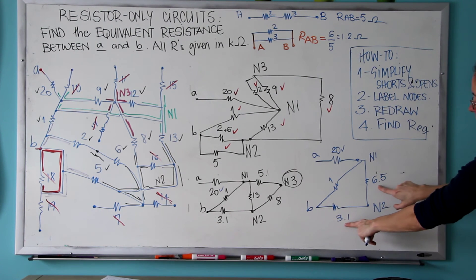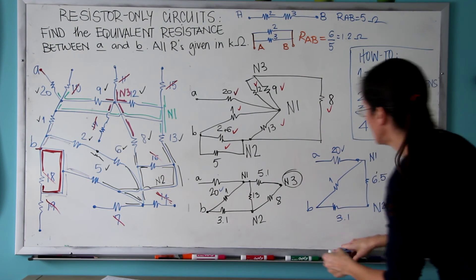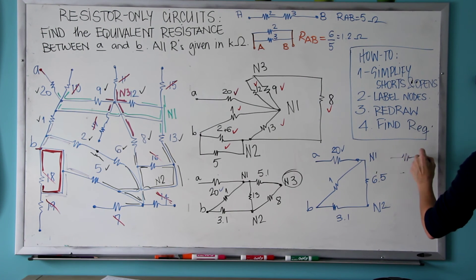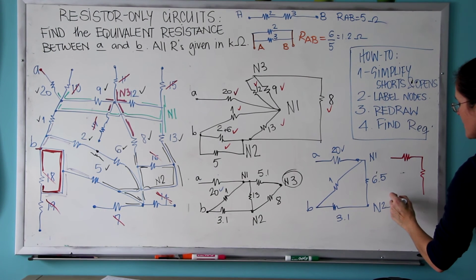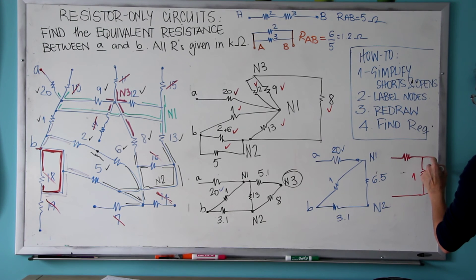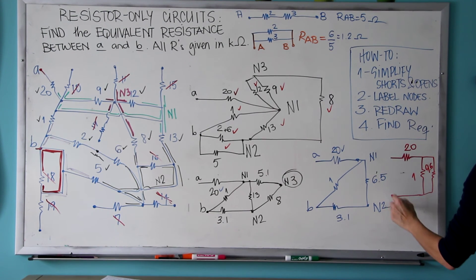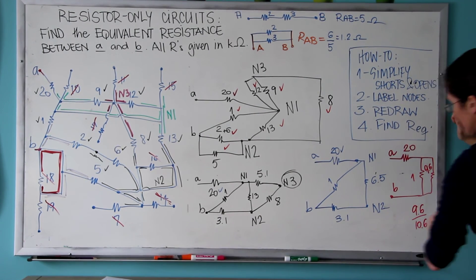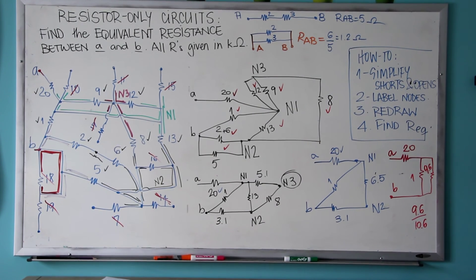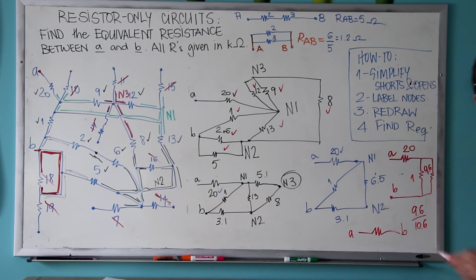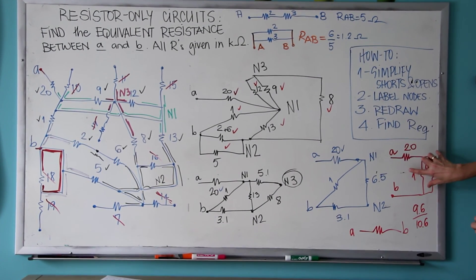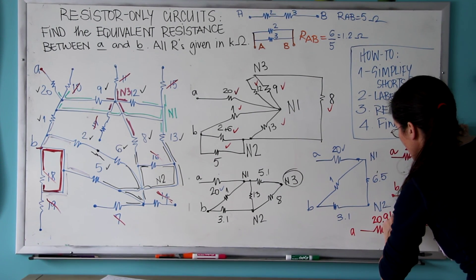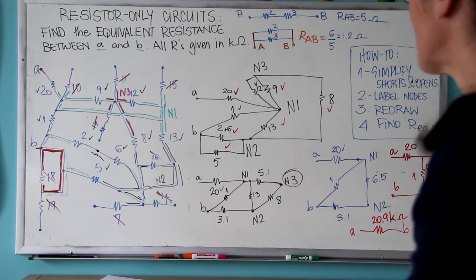And this is B. So now watch, 6.5 is in series with 3.1. So this will be reduced to 20 in series with 1 kΩ in parallel with 9.6. And this is A, and this is B. So we're going to do 9.6 divided by 10.6 because these two are parallel. And this is going to be more or less 0.9. So this is 0.9 plus 20. I'm going to call this 20.9 kΩ, more or less 21 kΩ. A long circuit, but I hope you can see how to simplify a circuit with 20 resistors.